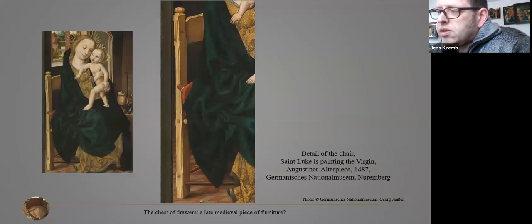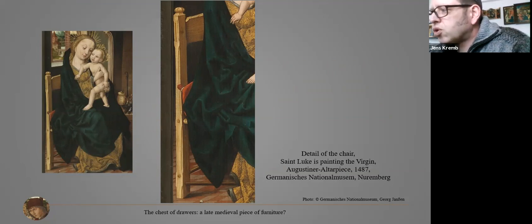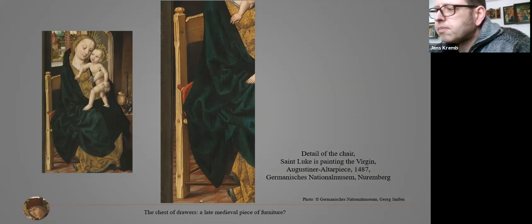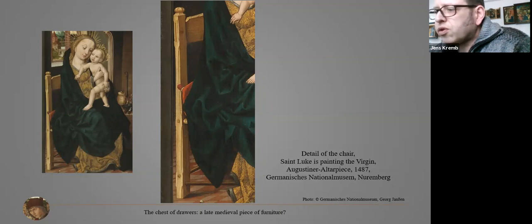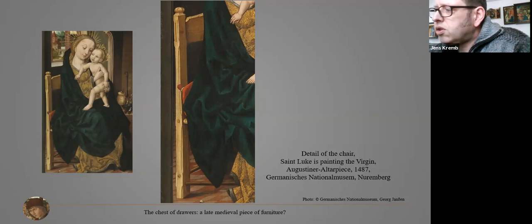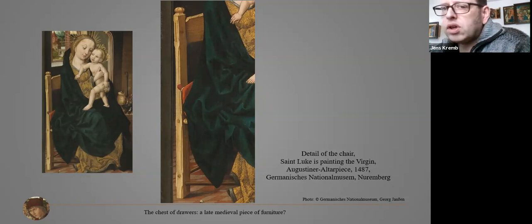The chair of the Virgin cannot be seen in its entirety, but the painter gives a very detailed depiction so that the construction — with its legs connected with turned stretchers — can be retraced very well. The left back leg, which can be seen, is rectangular in cross-section; the edges are provided with a concave profile, interrupted in the parts where the stretchers join the leg. The shoulder board of the back rest is connected to the upright support with mortise and tenon joining, additionally secured by a wooden double pin. A pressed and carved knob forms the upper end of the leg. Even the grain of the wood can be seen.